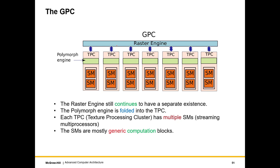Coming to the GPC: it has a raster engine. As discussed in chapter one, rasterization is not amenable to parallelism, so it requires a separate unit — that is why dedicated hardware called the raster engine is provided. Each GPC has seven TPCs, which stands for Texture Processing Cluster. That's more of a historical name; it's not that this hardware only processes textures.